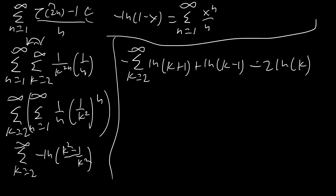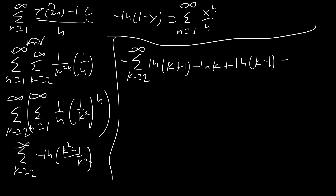Now we reorganize to create telescoping sums. We write this as [ln(k+1) minus ln(k)] plus [ln(k-1) minus ln(k)], then split into two separate sums. Looking at the nth partial sum and writing out the first few terms, this is clearly going to telescope. We get terms like ln(3) minus ln(2), ln(4) minus ln(3), and so on — all of those are going to end up canceling.